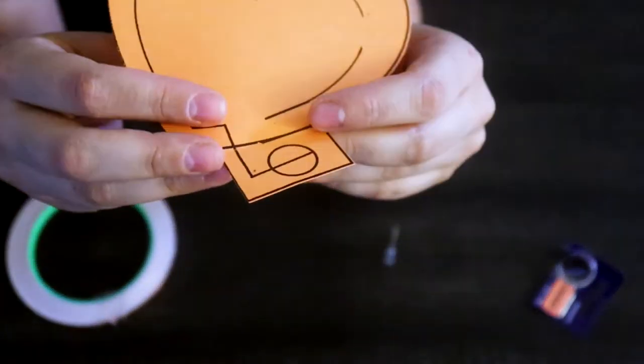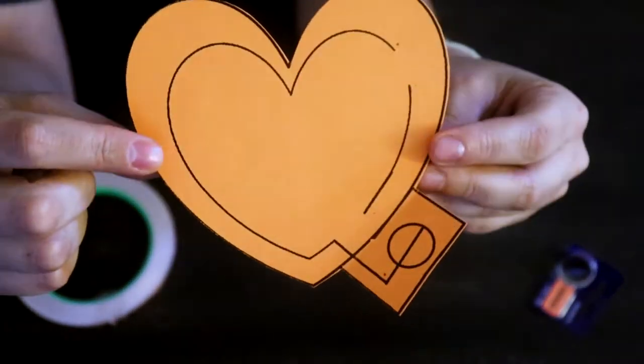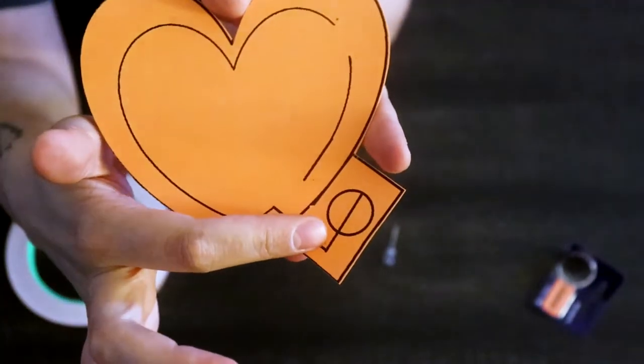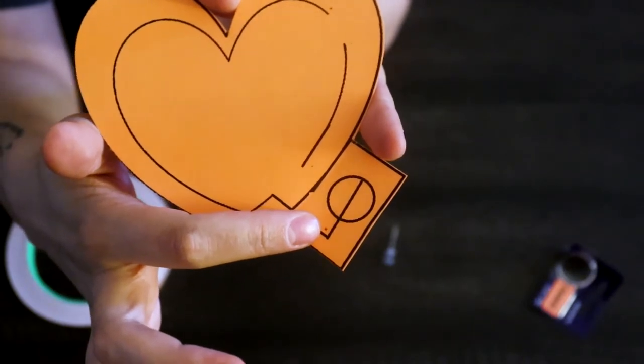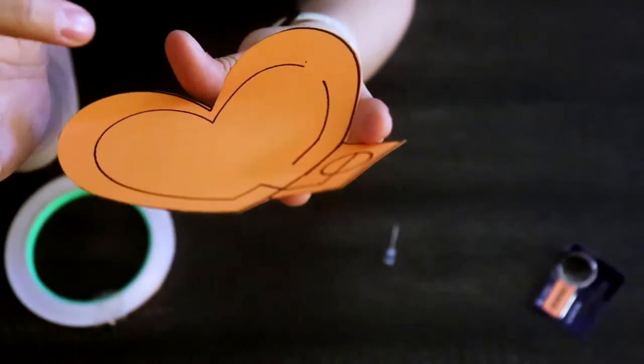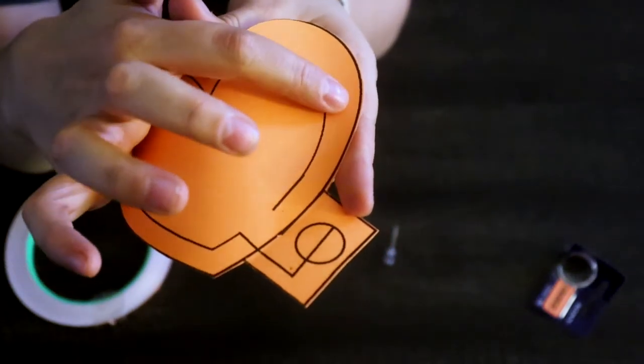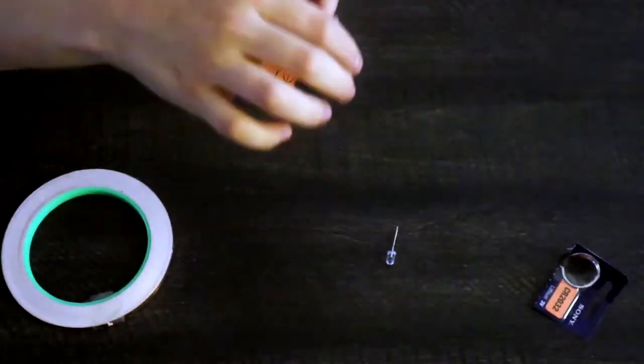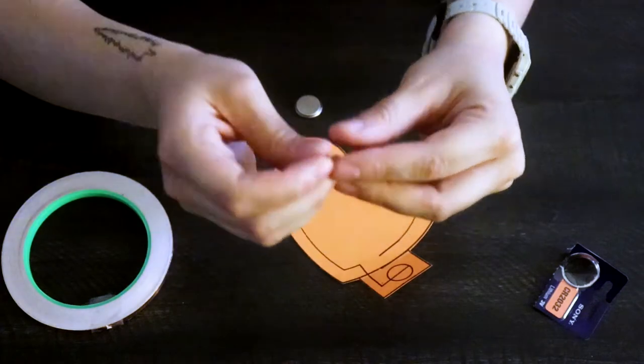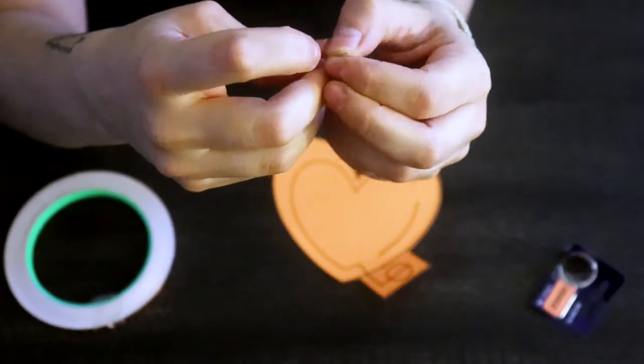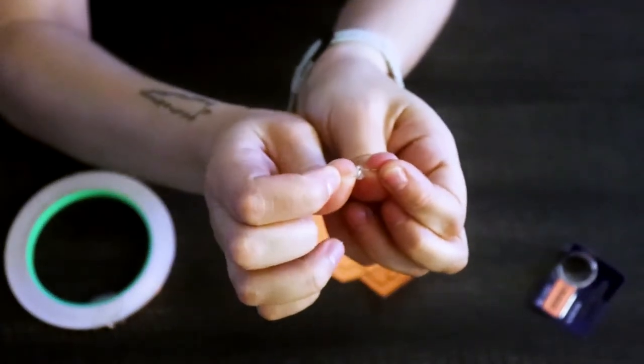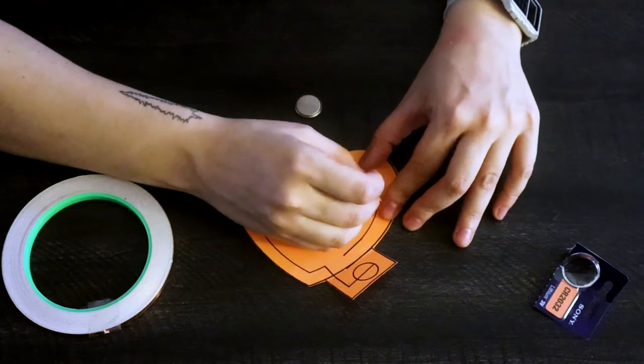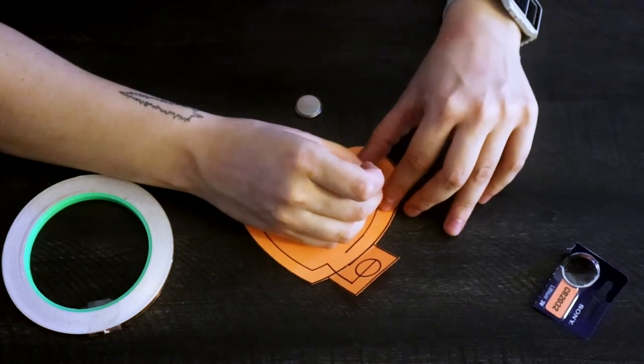So, as you can see on my heart, I created this myself. You don't have to use a heart, you can use whatever you want, but I did indicate a positive down here, it's very small, you probably can't see it, but it's there. And then I indicated a negative right here because this is where I want my negative to go. And then there's also a positive sign right here and a negative sign right here. So the first thing I'm going to do is I'm going to bend the legs of this little light out so that it can sit right here.